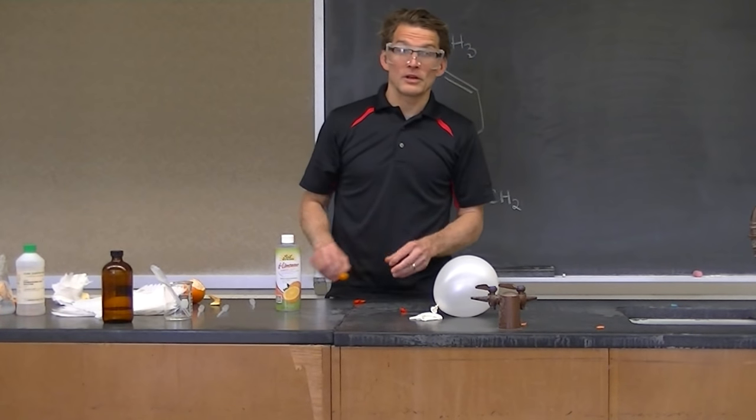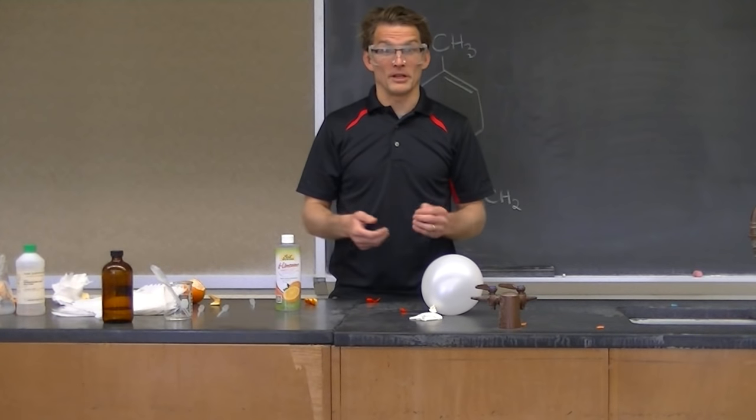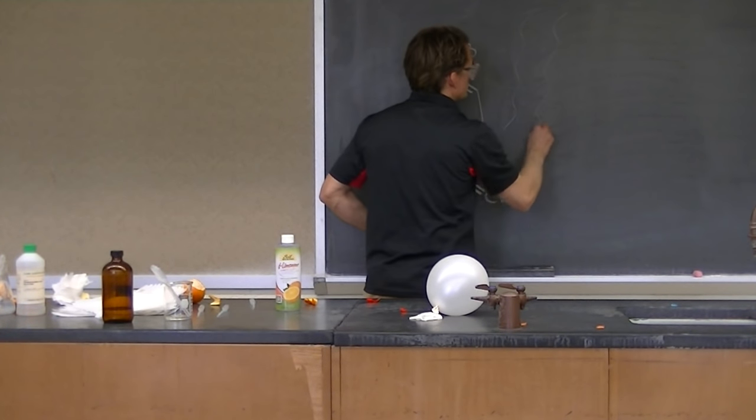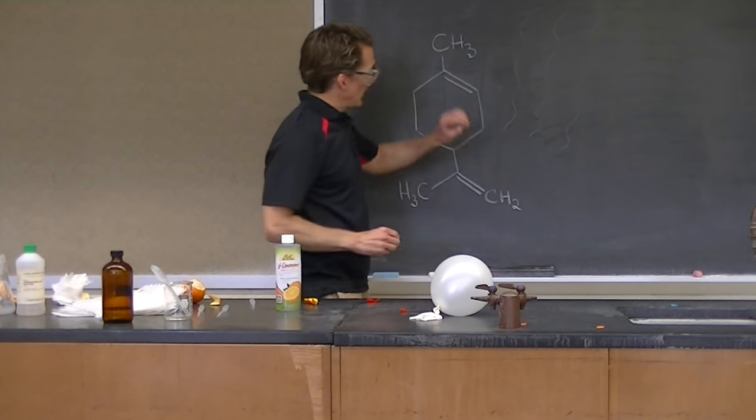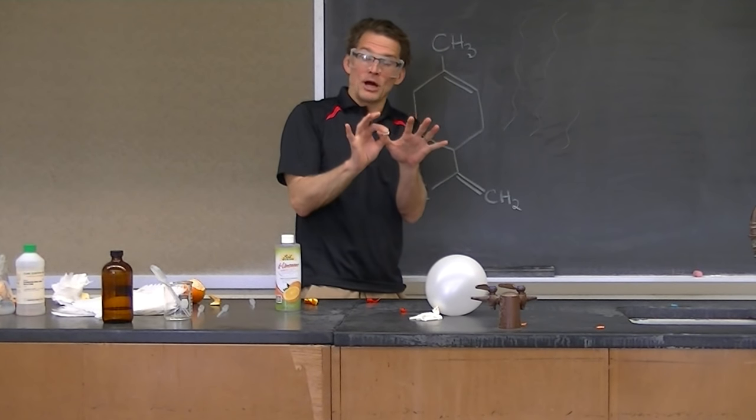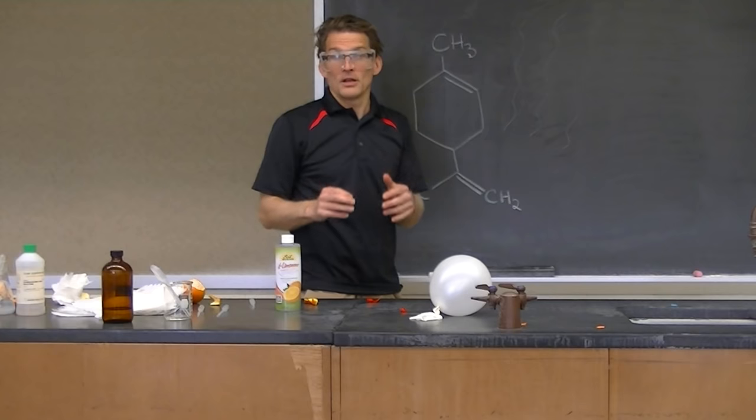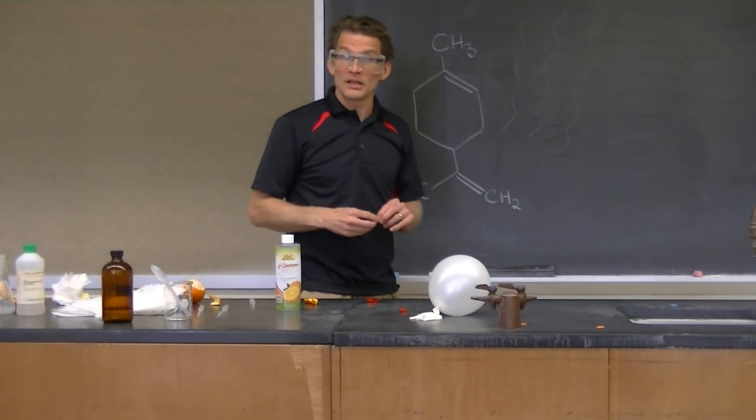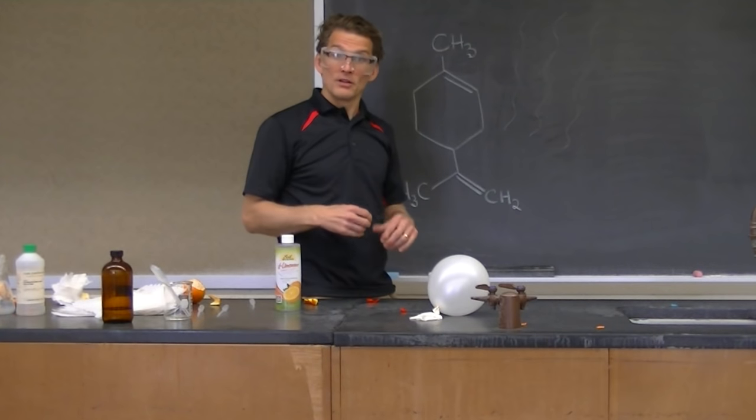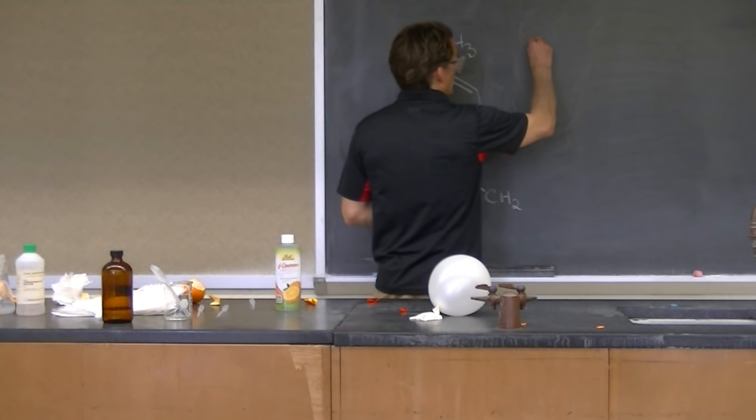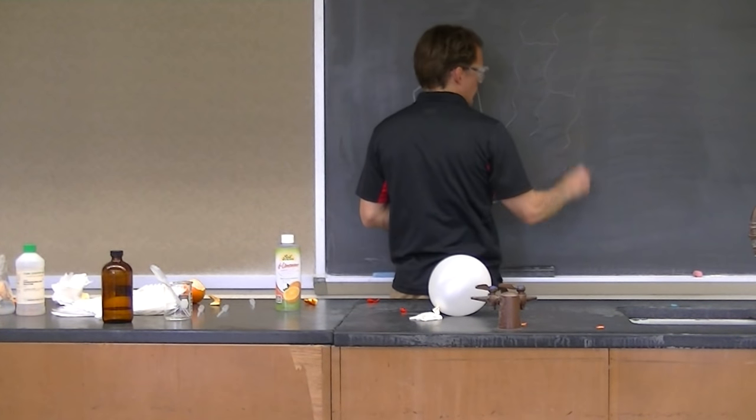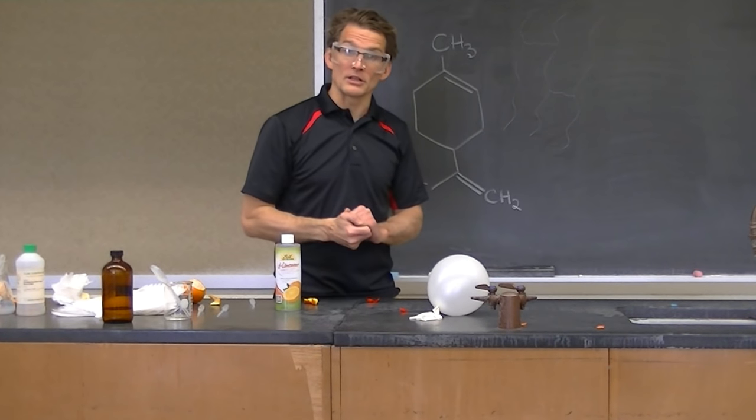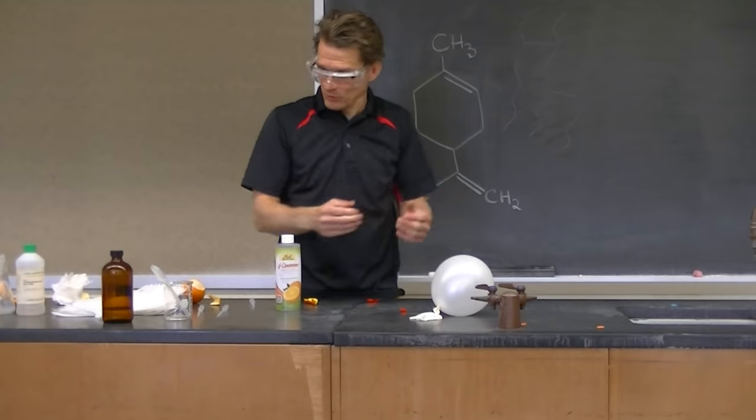Some balloons have vulcanized rubber in them. So rubber is made of polymer strands. If the polymer strands are not cross-linked then the rubber can dissolve easily in non-polar solvents. In vulcanized rubber the polymers in the rubber are cross-linked. And that makes the rubber more resistant to dissolving in solvents. Which is exactly what we're observing.